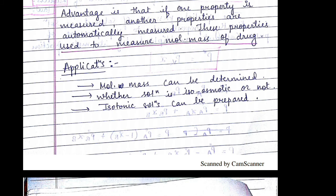The applications or advantage of the colligative property is that it is used to measure the molecular mass. It can also be used to check whether the solution is iso-osmotic or not, or whether the solutions prepared are isotonic solutions or not.